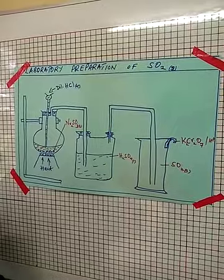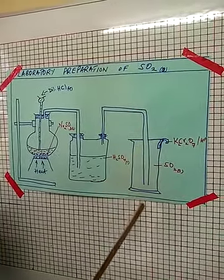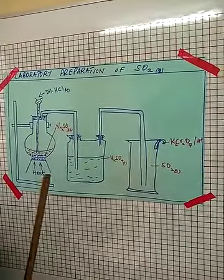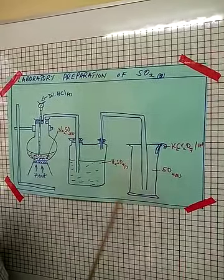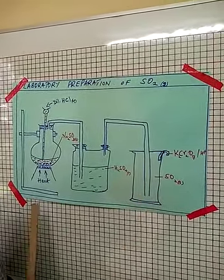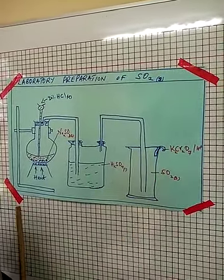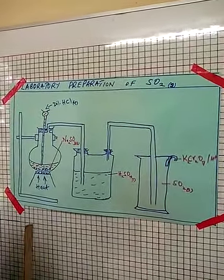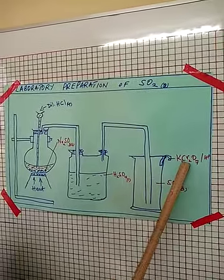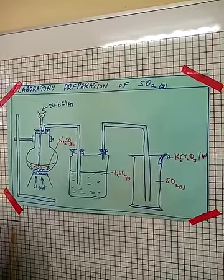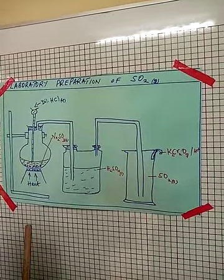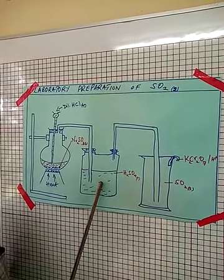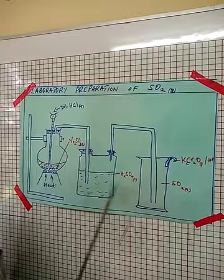Being heavier than air, sulfur dioxide is collected by downward delivery, or upward displacement of air. Being a colorless gas, you may not be able to see whether the gas jar is full, and that is why a piece of filter paper soaked in acidified potassium dichromate is placed at the mouth of the jar. The moment you see this acidified potassium dichromate change color from orange to green, that is an indication that the gas jar is full. The gas is dried using concentrated sulfuric acid and collected by downward delivery.